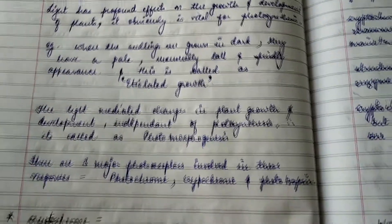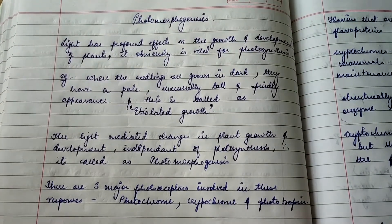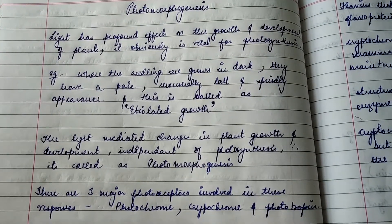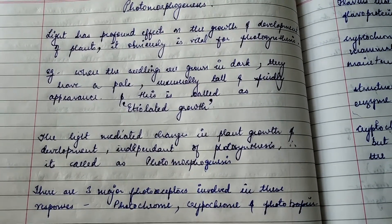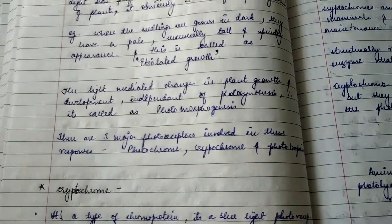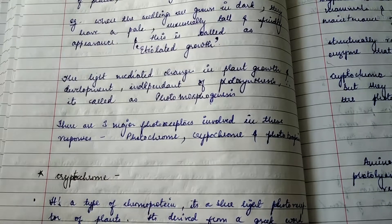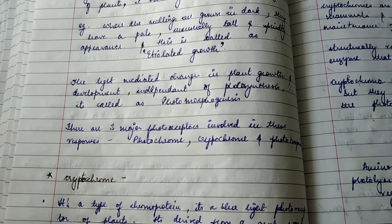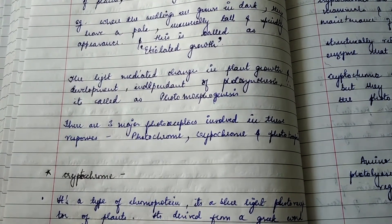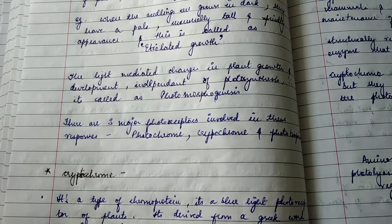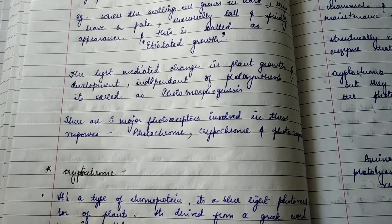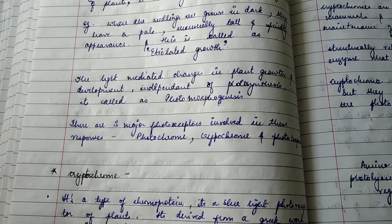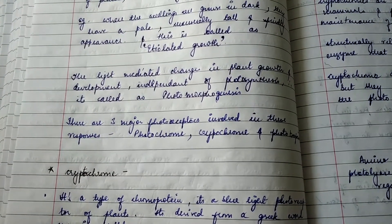Photomorphogenesis refers to the light-mediated changes in plant growth and development that are independent of photosynthesis. All changes that occur in the plant due to light and that affect growth and development, but are independent of photosynthesis, are referred to as photomorphogenesis.